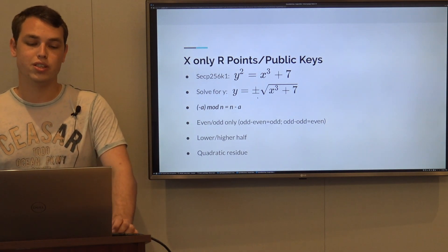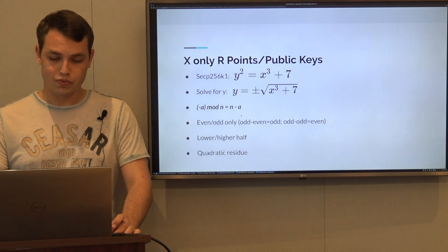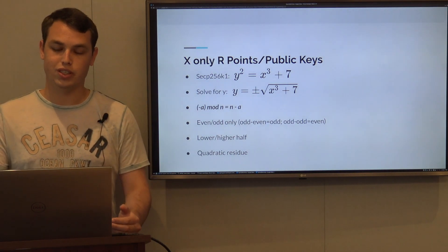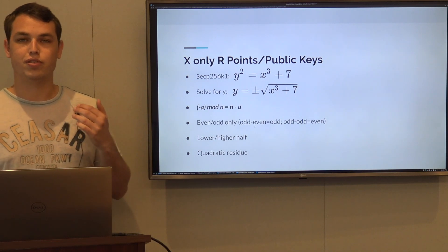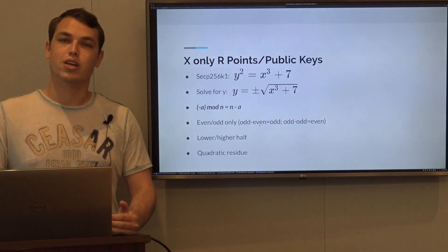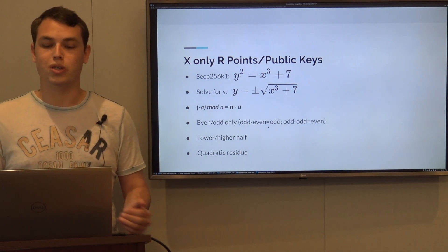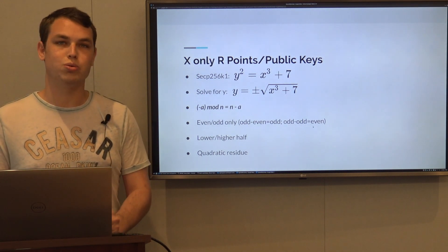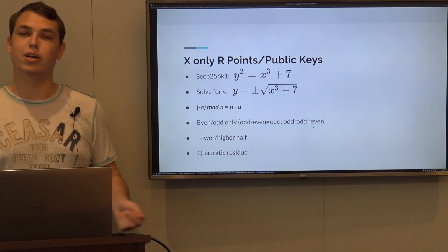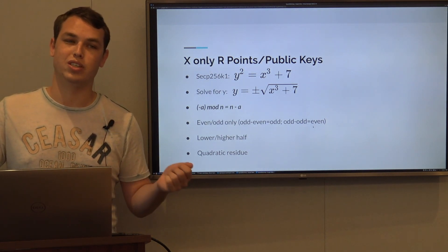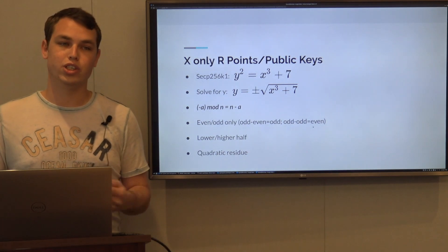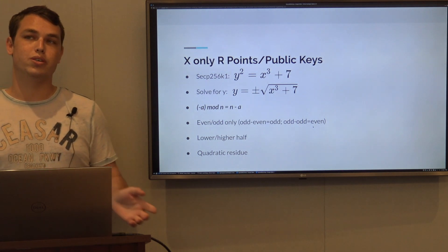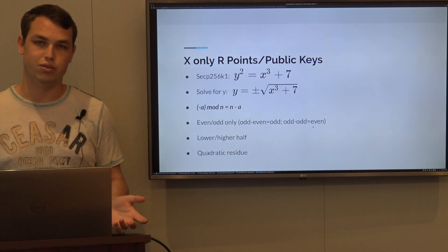One is even and odd. Because our group order is odd, it's an odd prime - if our y is even, when you do p minus even you get odd, and if our y is odd, you do p minus odd you get even. If we can somehow tell the recipient if it's even or odd, he can solve and choose the correct y. But this still requires another byte, or we can say we are accepting only even y's.